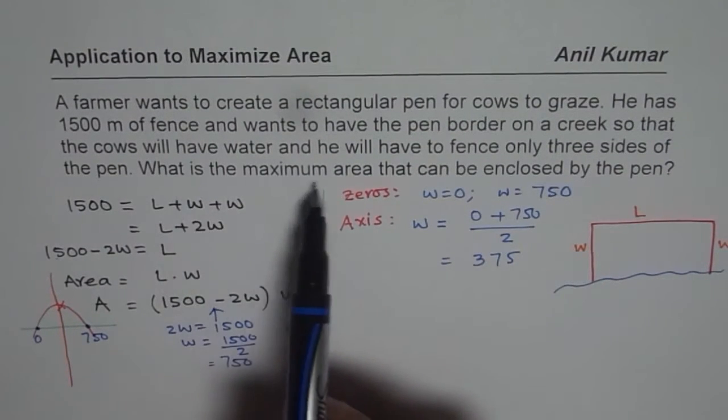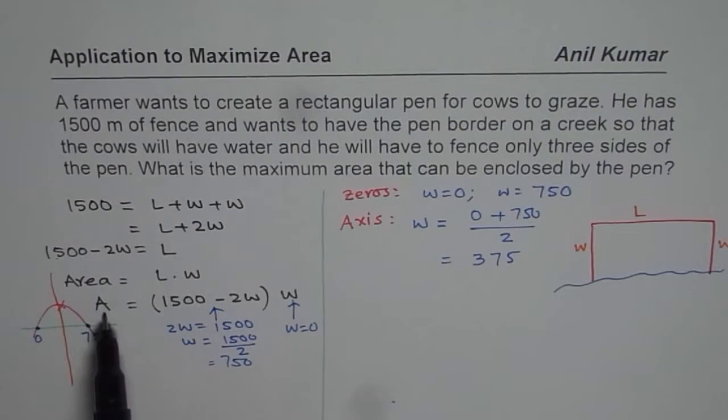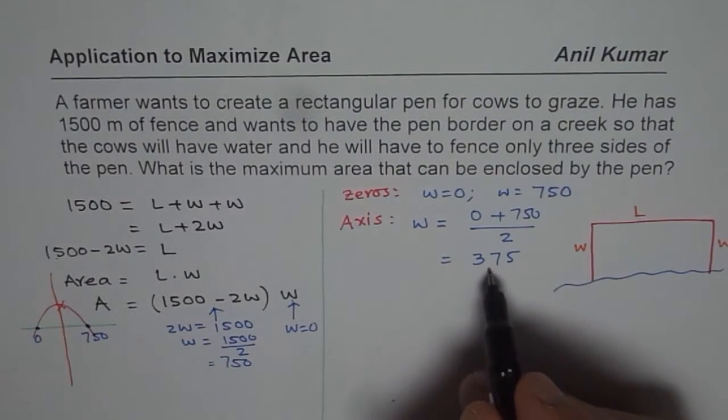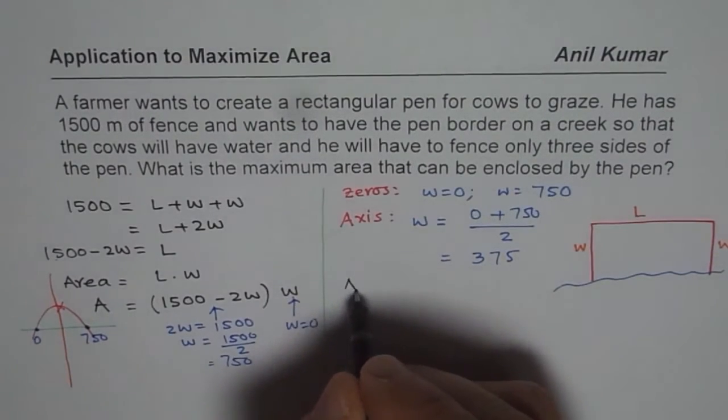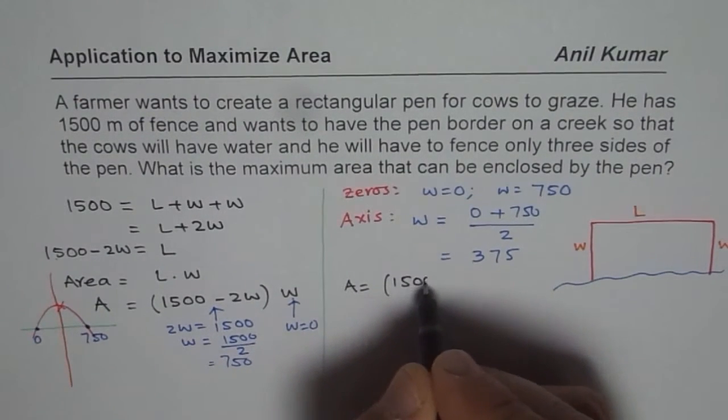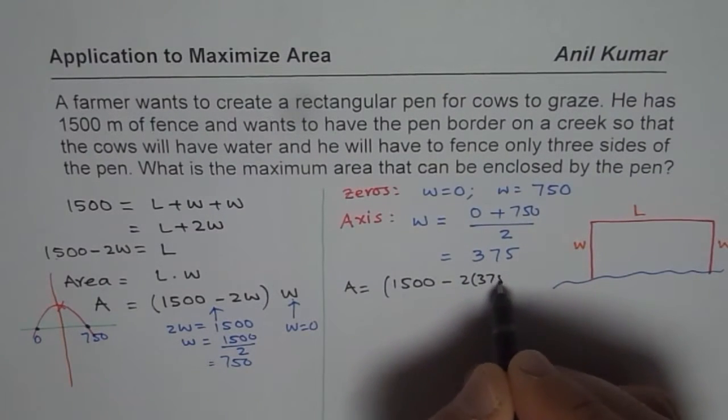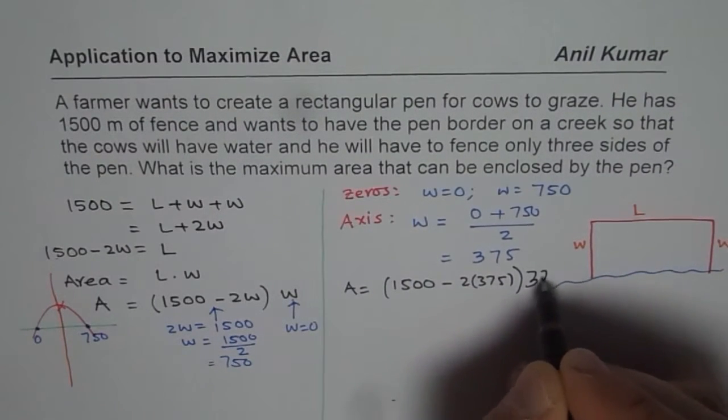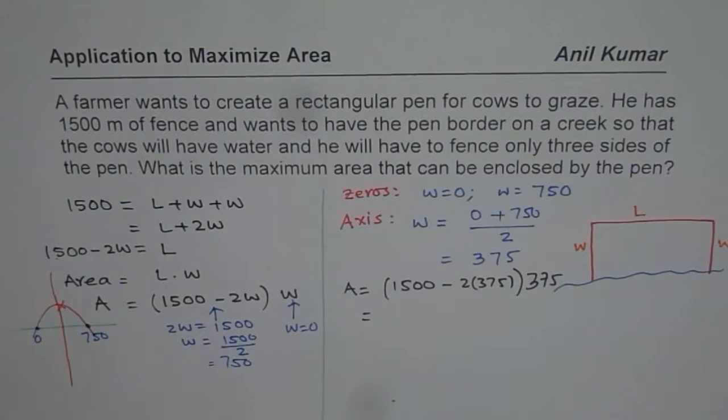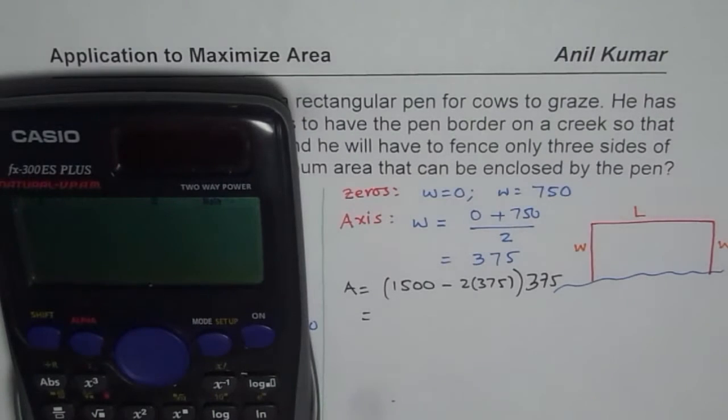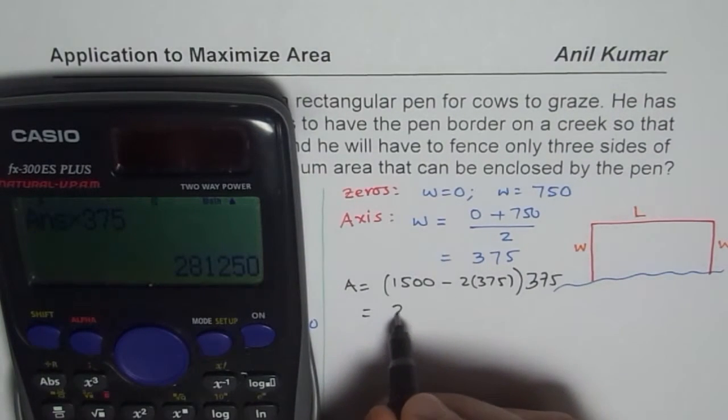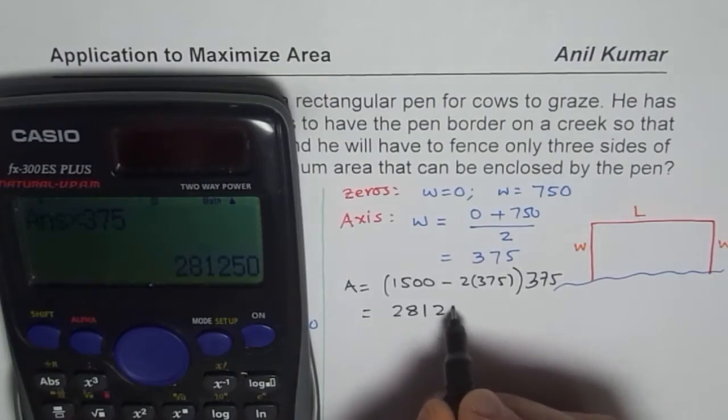Question is, what is the maximum area that can be enclosed? So in this expression for area, let us write W as 375. So get area as equals to 1500 minus 2 times 375 times 375. So at this stage, we can use calculator and calculate the answer. So we have 1500 minus 2 times 375 equals to, and multiply this by 375. And that gives you the maximum area of 281,250.